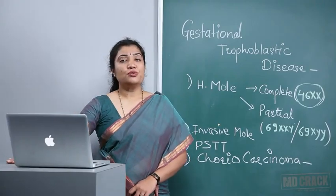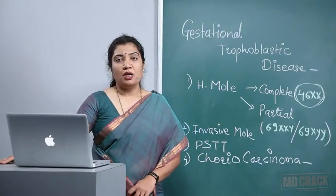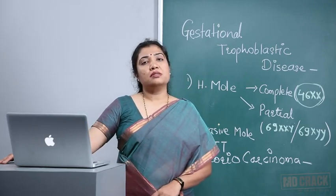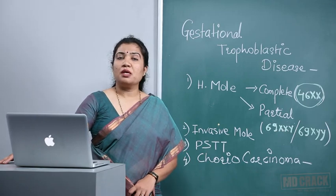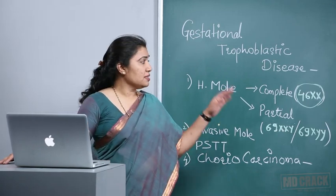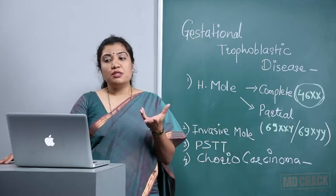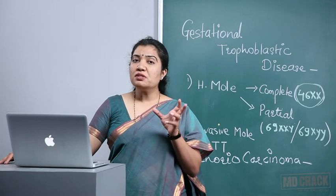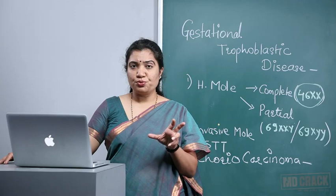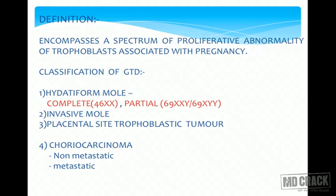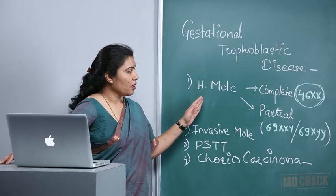Today we are going to see gestational trophoblastic disease. Pregnancy has syncytotrophoblast and cytotrophoblast as trophoblastic tissue. GTD is a big spectrum which involves benign to malignant proliferative abnormality of this trophoblastic tissue. By definition, GTD means a spectrum of proliferative abnormality of the trophoblast of pregnancy.